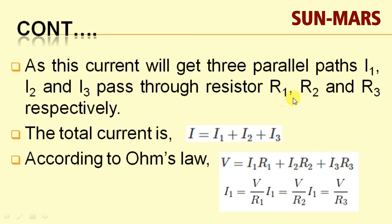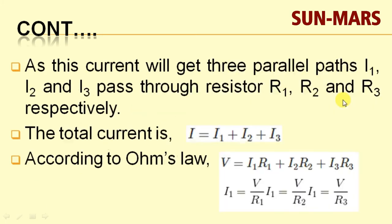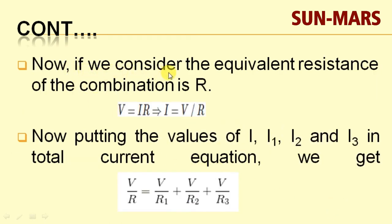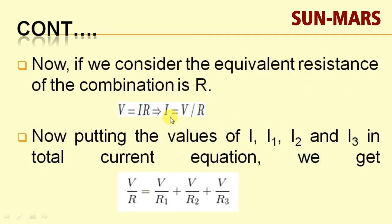The branch currents are I1, I2, and I3, through resistors R1, R2, and R3 respectively. Total current I is equal to I1 plus I2 plus I3. According to Ohm's law, we can write this as V/R1 plus V/R2 plus V/R3. If we consider the equivalent resistance of the combination as R, then I equals V divided by R, which is the total equivalent resistance. So total current equals total voltage divided by total resistance.